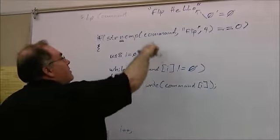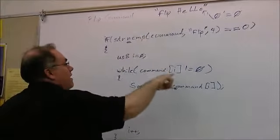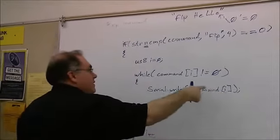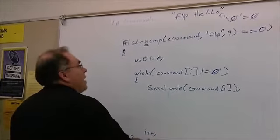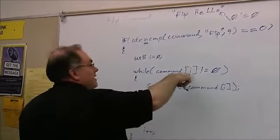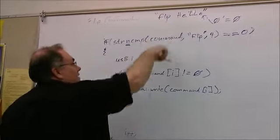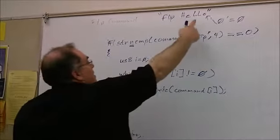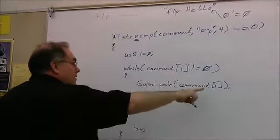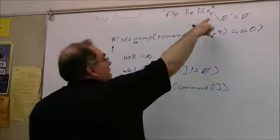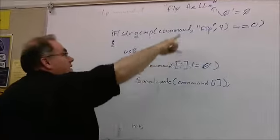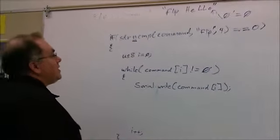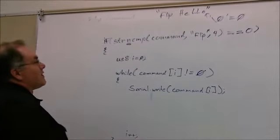It starts out with i equal to zero and it says at position zero, is that not zero? Position zero is the letter f, and that's not equal to zero, so it prints out the letter f. i is zero, increments i so i is now one, and goes up here and says is command position one, which is l, not equal to zero? So it prints l, and so on all the way until it prints. Then the character that we can't see at the end, the null character, that is equal to null so it exits.